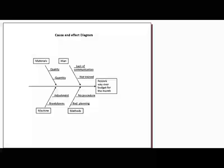In this particular case, the problem is rework being way over budget for the month. This fishbone diagram is used as a brainstorming tool, so the person tackling the problem gets a group of people together — best if it's cross-functional, meaning people from outside the problem area who may bring additional knowledge. The brainstorming session should take around 30 to 45 minutes tops.